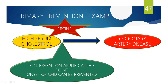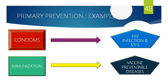For example, high serum cholesterol causes coronary artery disease, so we ask patients to control their diet, reduce consumption of red meat or oily foods — the risk factor is controlled or modified so they won't get coronary artery disease. Other examples include condoms for preventing HIV infections and immunizations such as polio and BCG vaccines — all vaccinations given to children to prevent diseases.